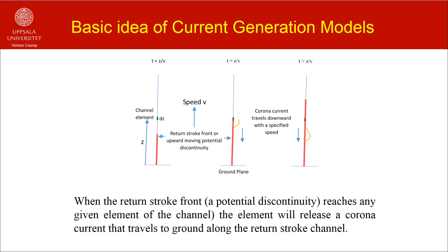Let me explain the concept of current generation models. Consider just one channel element on the return stroke channel located at height z, marked by dz in the diagram. When the return stroke front reaches this channel element, it will release a corona current pulse that will travel to ground along the return stroke channel. This corona current will transport negative charge from the corona sheath to ground. This process happens at all points along the return stroke channel and the cumulative effect of these corona currents gives rise to the return stroke current.